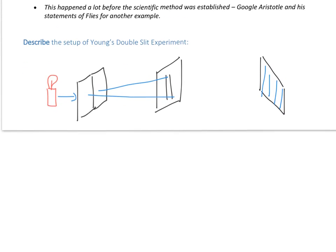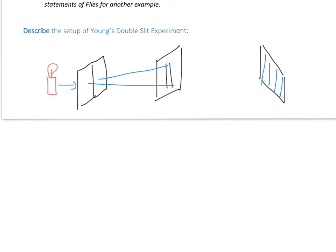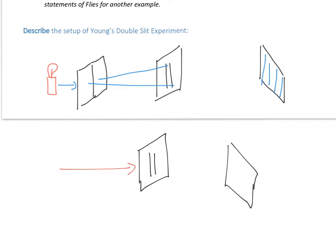Now, if you've done this experiment, which a lot of you might have done, you will have done it just using a laser going straight into a double slit with your screen on the far side - so no single slit before that. The reason is because a laser is a highly monochromatic source of light, and you can shine it on both slits. Putting those two things together, you don't actually need a single slit to turn it into a coherent source of light, because it's monochromatic it's also coherent. That's much simpler than using a candle or a light bulb.